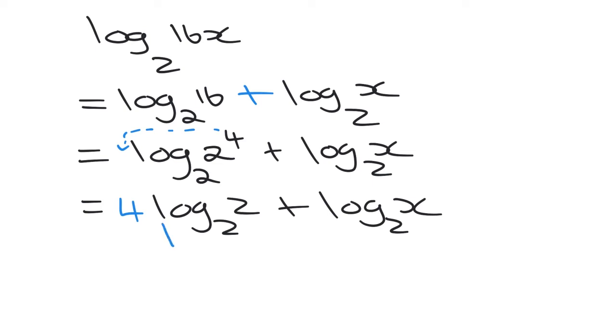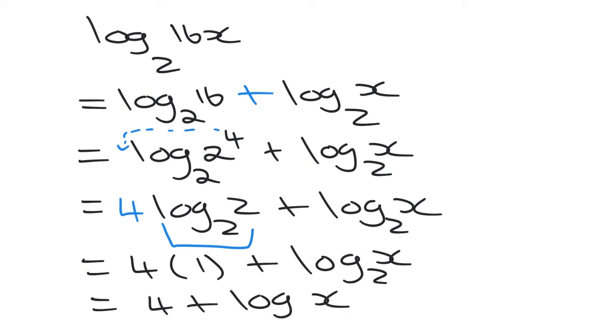Now once again, one of the rules told us that if we have the log of the number and the base is exactly the same, what does that give us? Well, that just gives us a 1. So this thing just gives us 4 multiplied by 1 add log x base 2. Well, this will just simplify to 4 plus log x base 2.